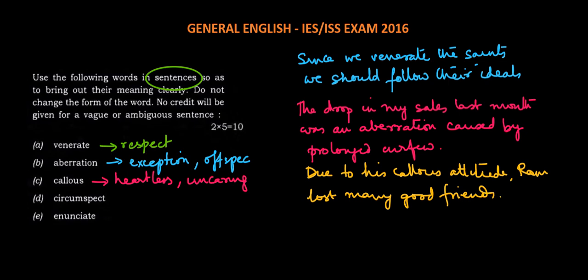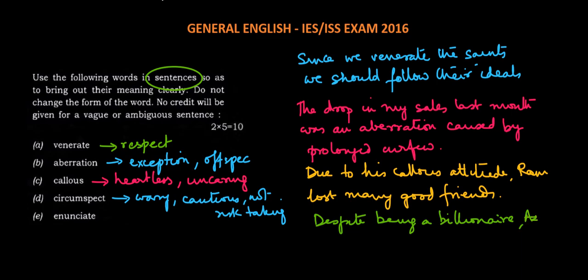Next, circumspect. It means not to take risks, someone who is very cautious, not risk-taking. And the sentence could be: despite being a billionaire, Azeem Premji is circumspect about his business decisions.